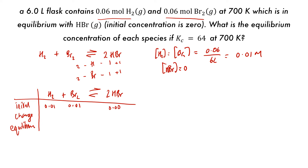The change is minus X for both hydrogen and bromine, and plus 2X for HBr. This gives equilibrium values of 0.01 minus X for both H2 and Br2, and 2X for HBr. We can then insert these values into an equilibrium expression to see if it's possible to approximate.